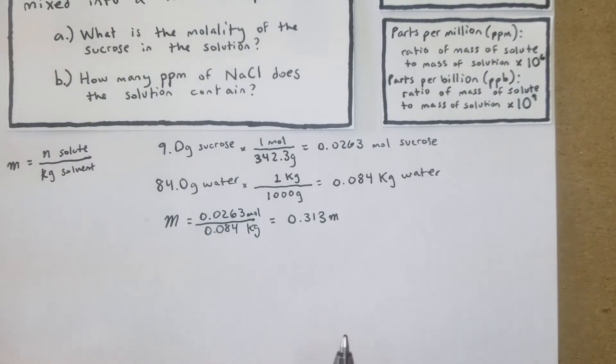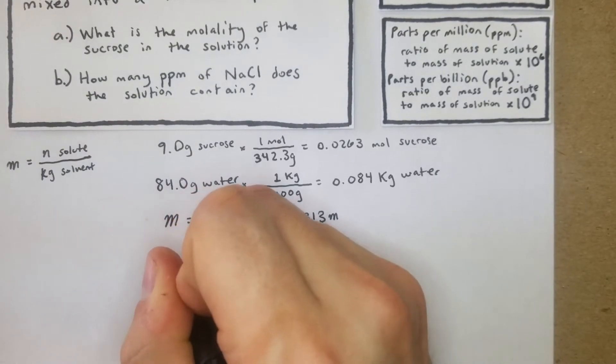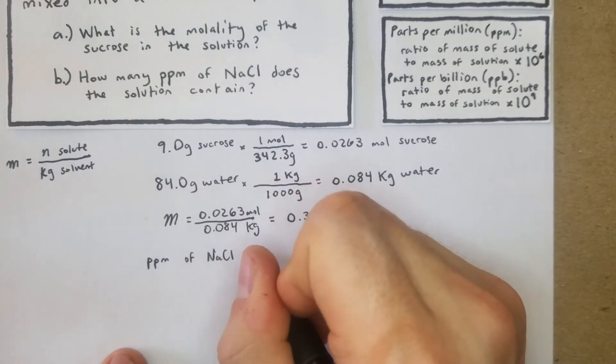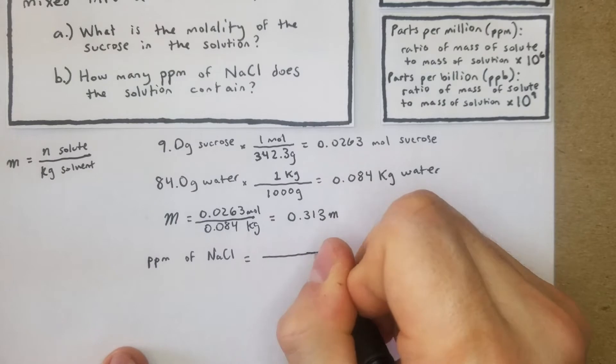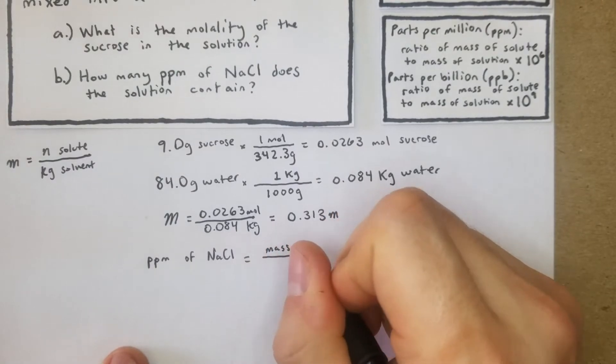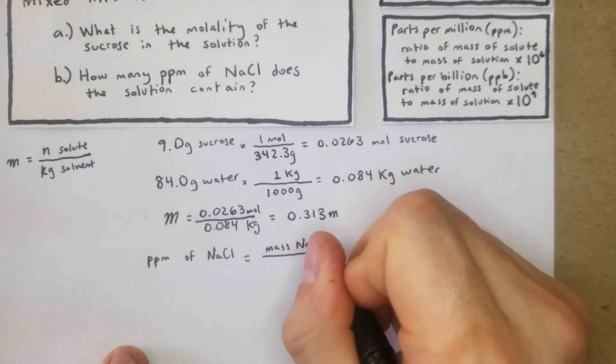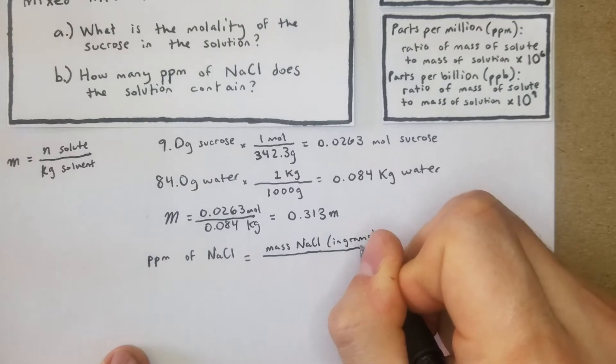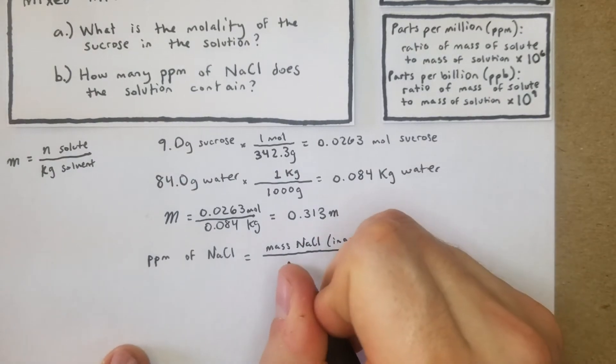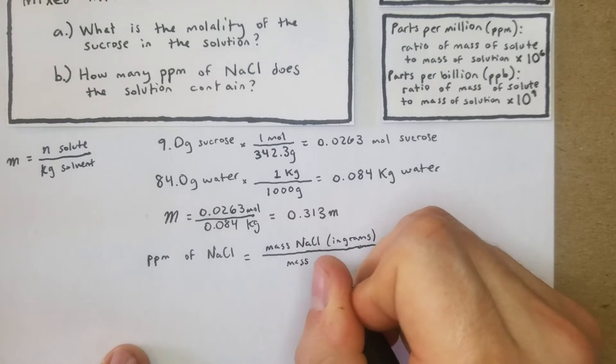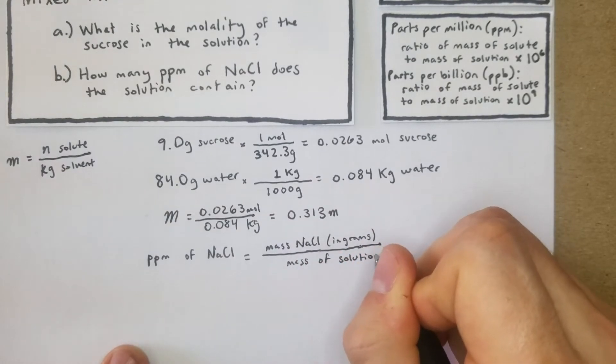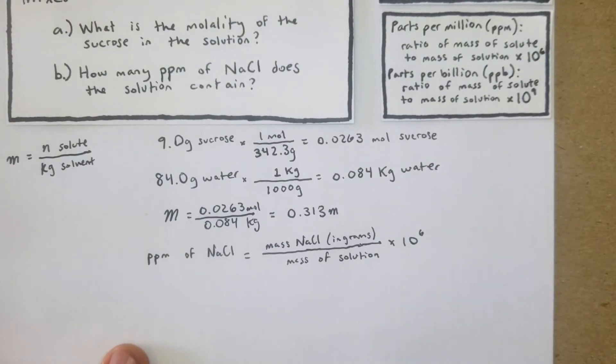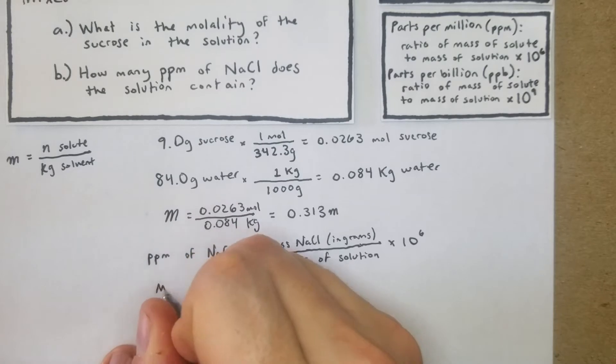Now for part b of this problem, it's asking how many ppm of NaCl does the solution contain. It's pretty straightforward. PPM of NaCl is going to equal the mass of NaCl in grams divided by the mass of solution times 10 to the sixth.